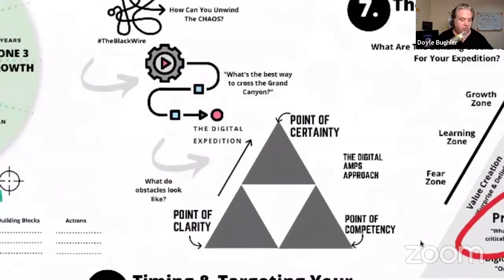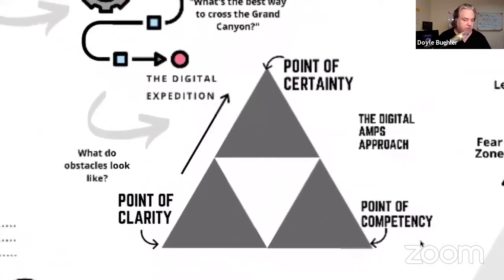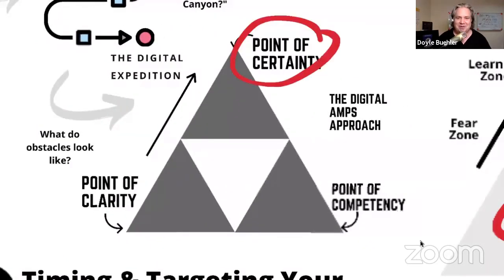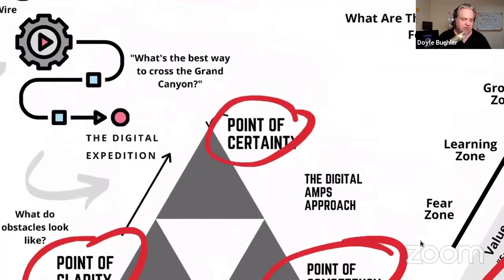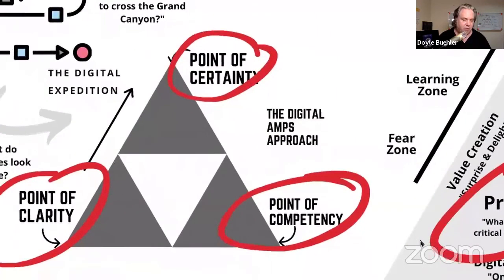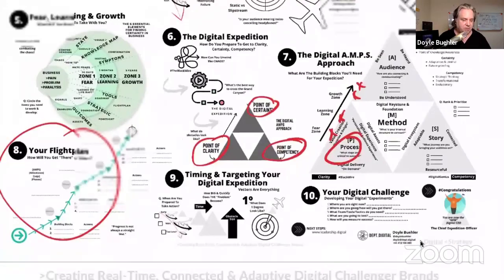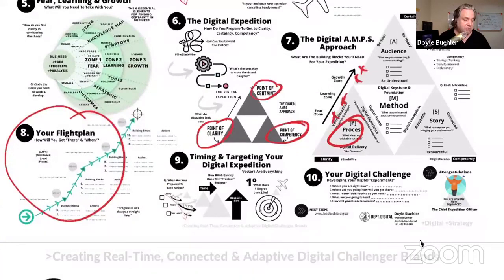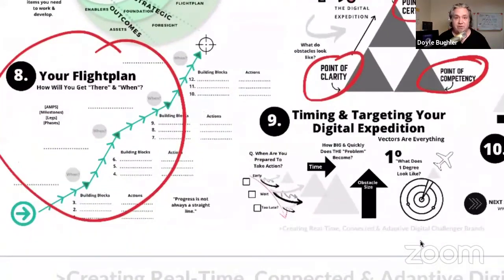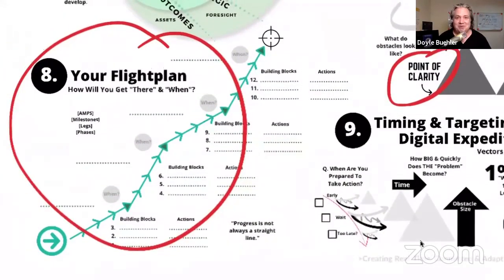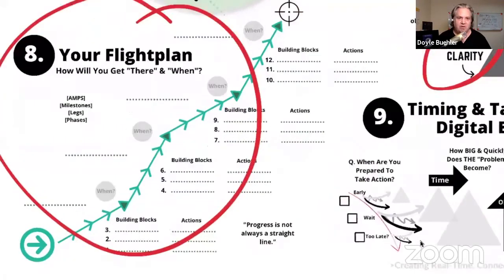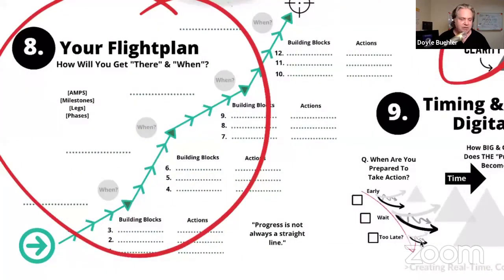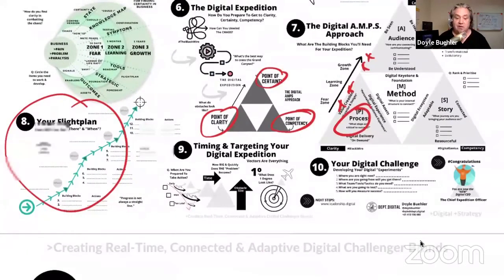We want to get to the point of certainty, clarity, and competency. Going through these 10 base camps gives us the ability to decide when and how we're going up this mountain, and how we're creating this expedition to actually help the business. Then there's your flight plan. I've got a lot of aviation-type metaphors and stories — that's sort of my background from many years ago. We want to create a flight plan that says this is the direction we need to go, set up some experiments, understand where you are, and decide where you want to go.